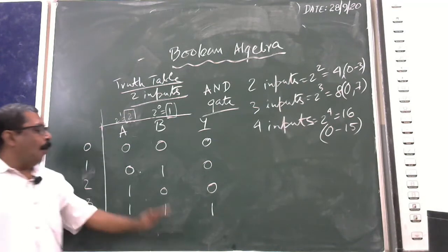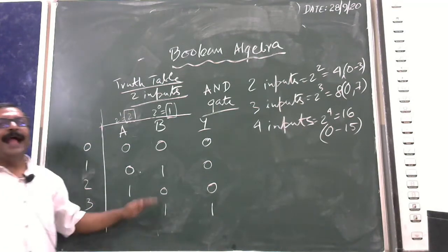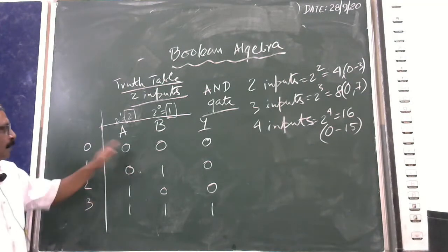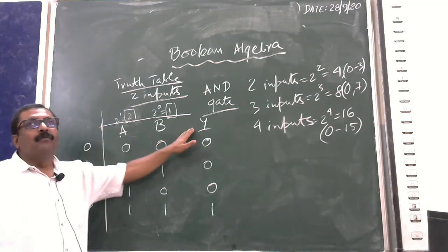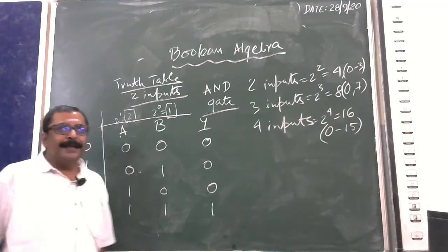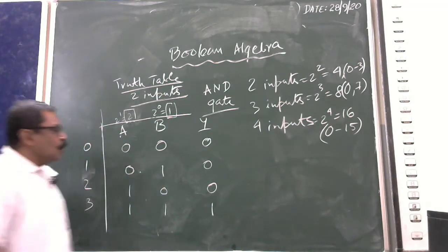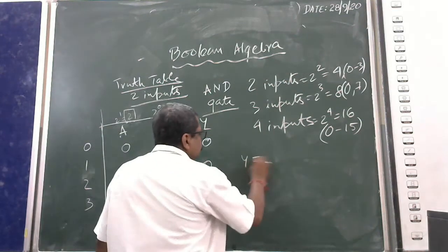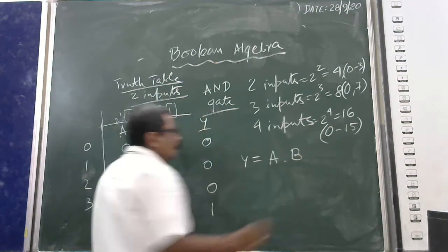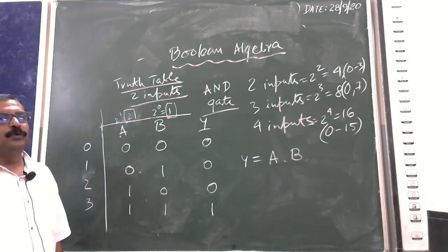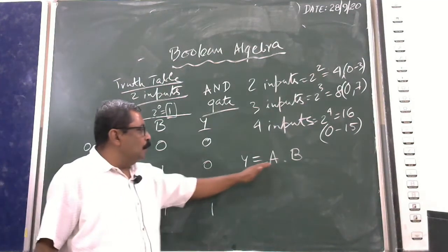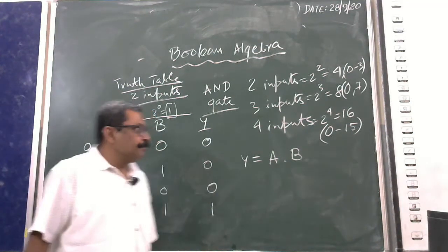This is the truth table of the two-input AND gate, where A and B are the inputs and Y is the output. The second thing we have to write is the expression: Y is equal to A·B.